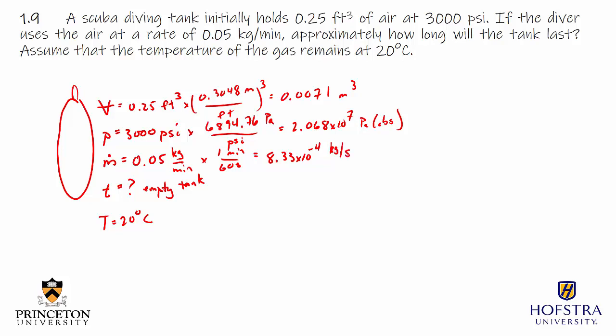To get an approximation we're assuming that the mass flow rate is being held constant at the 0.05 and the temperature is held constant at 20 degrees C. So to start off this problem, if I know that I'm losing mass at a particular rate, to figure out how long it will take I will need to determine the initial amount of mass that I have.